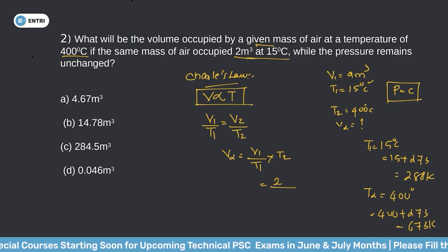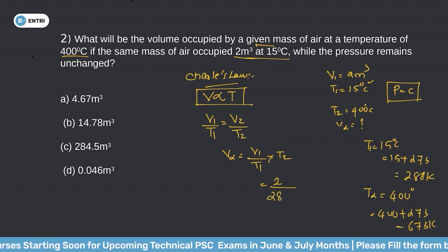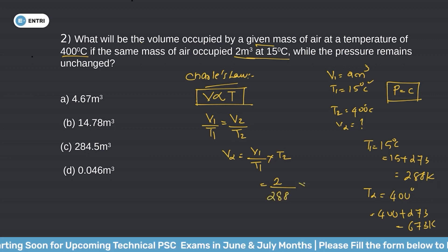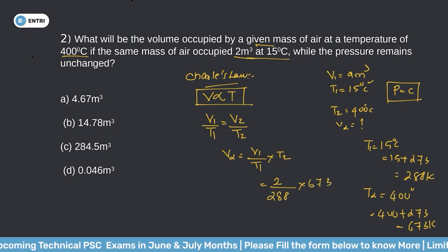Applying the values: T1 equals 15 plus 273 equals 288 K, and T2 equals 400 plus 273 equals 673 K. So V2 equals V1 multiplied by T2 divided by T1, which gives 2 multiplied by 673 divided by 288.